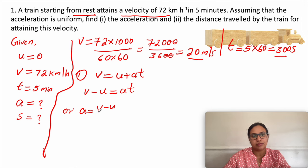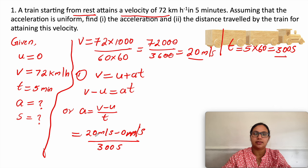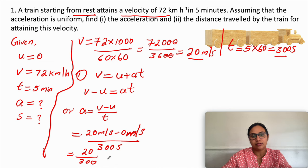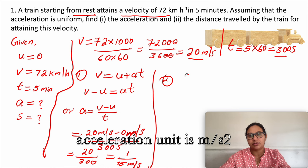So a equals v minus u divided by t, which gives 20 meter per second minus 0 meter per second divided by 300 seconds. That gives 20 divided by 300, which equals 1/15 meter per second square. Now we need to calculate the distance traveled, using either the second or third equation of motion.